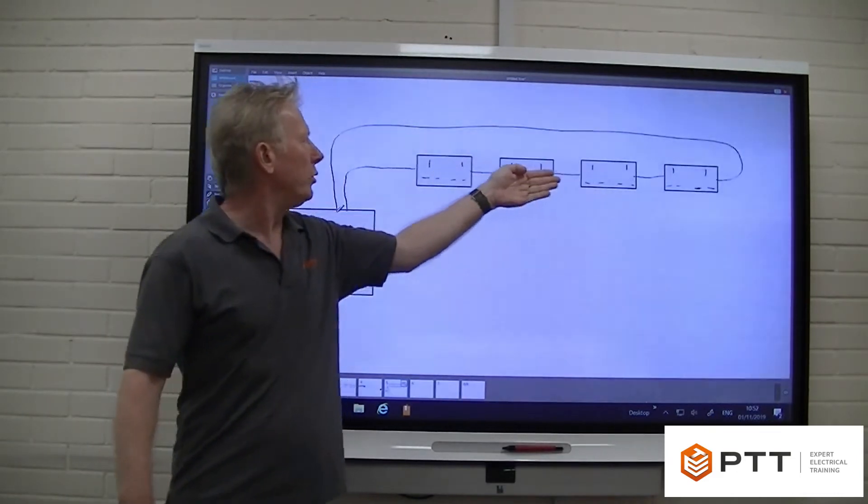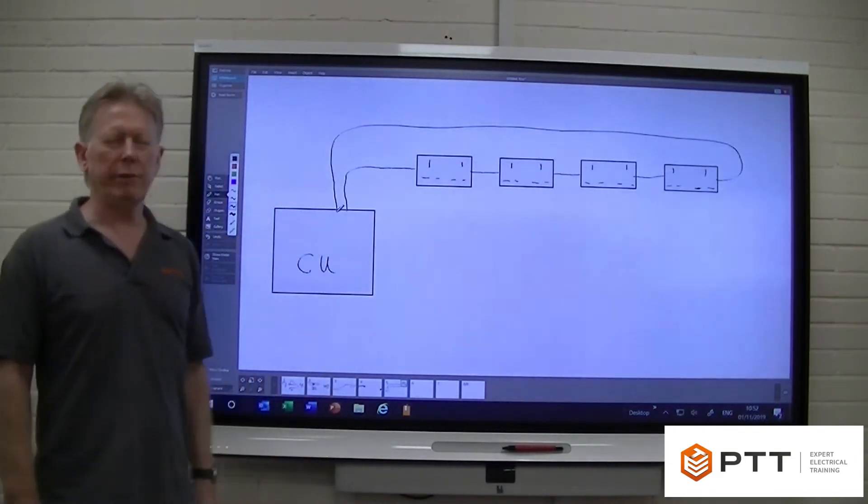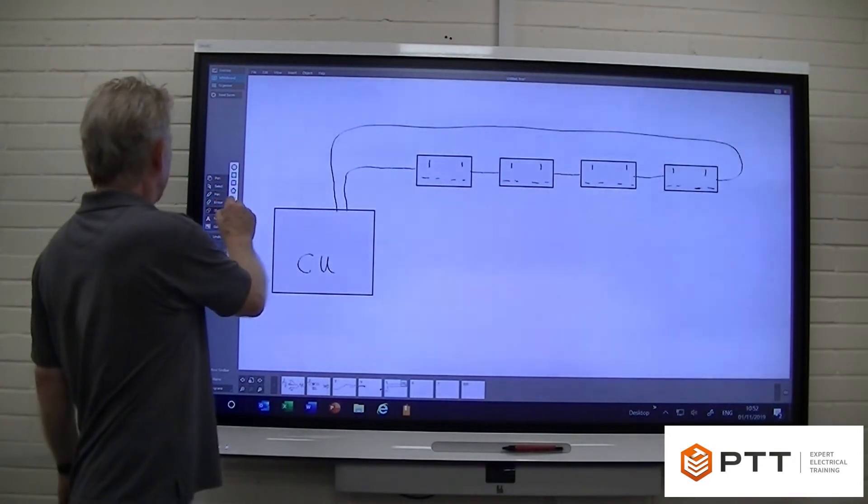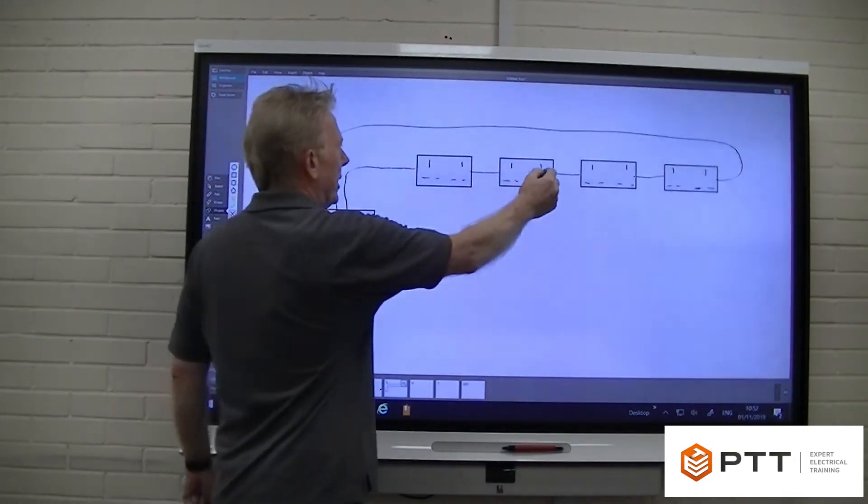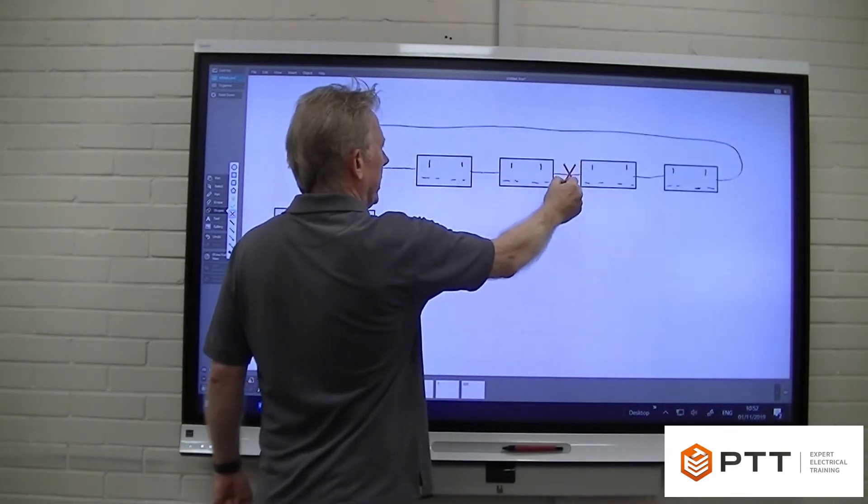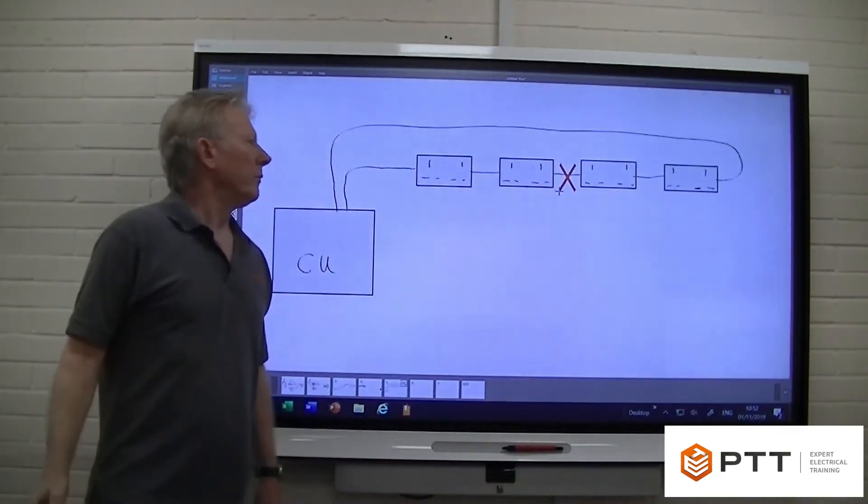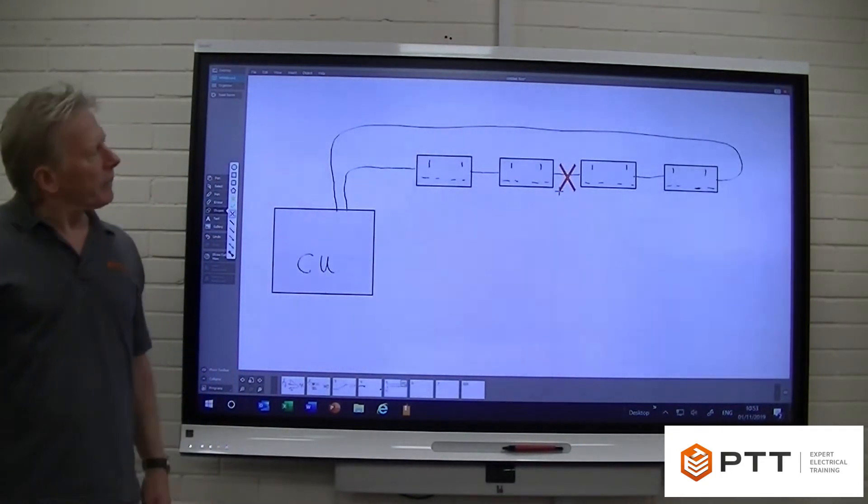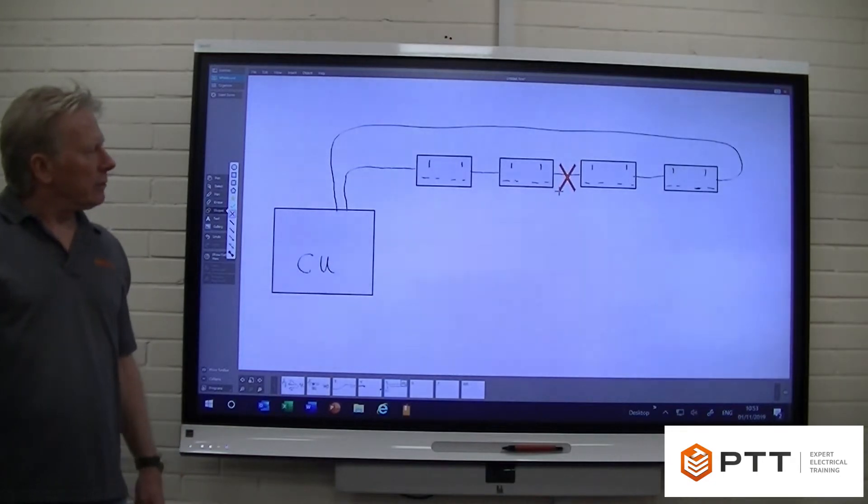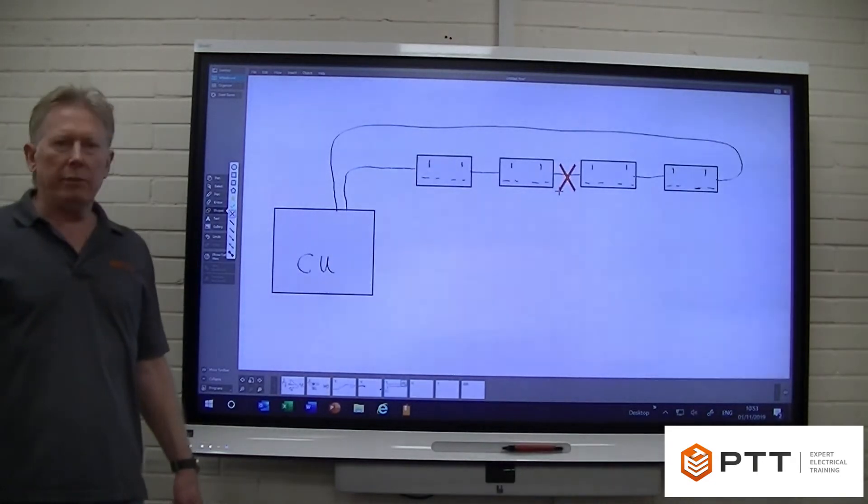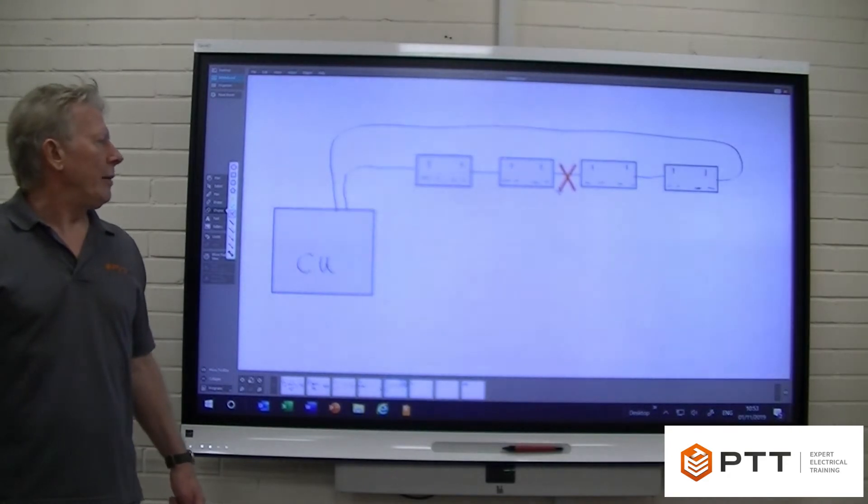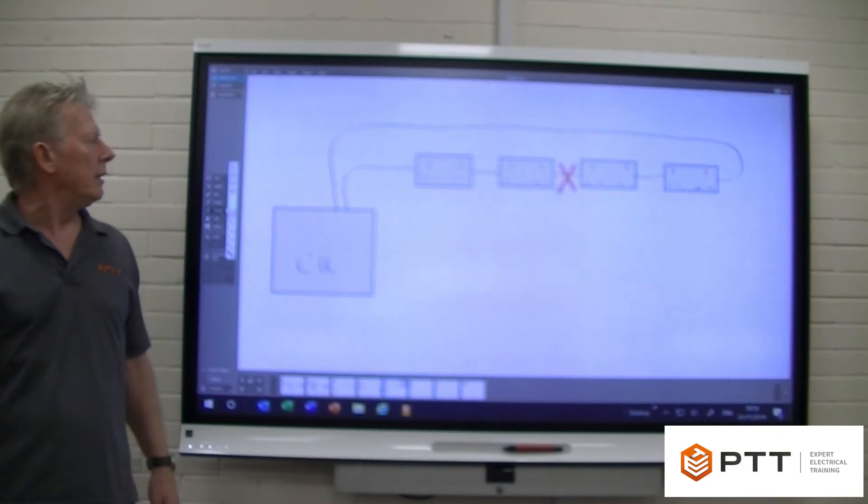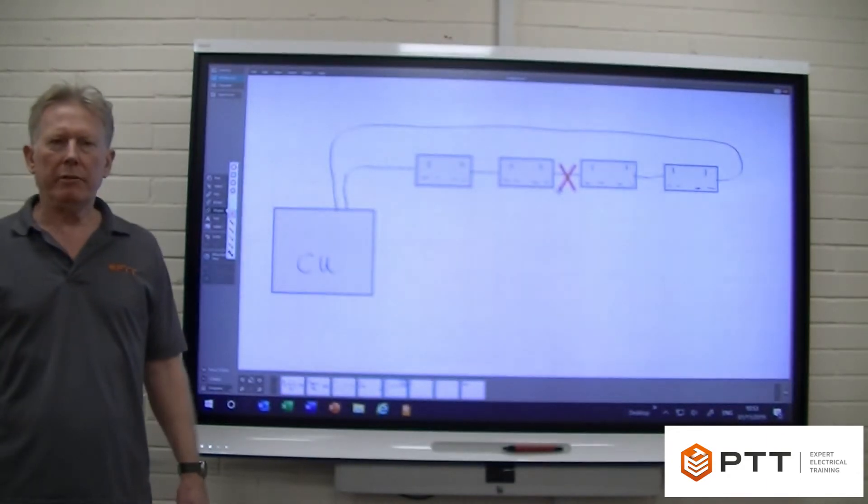And because of this, it's very important that we actually test the ring correctly. Now I'll just demonstrate something. If we were to actually break the ring there for instance, we may not actually be aware of that failure. But now what we've done is we've actually got two radials now which are now protected by our 32 amp breaker, which is too much for the actual cable concerned. So this is where a correct regime of testing actually comes in.